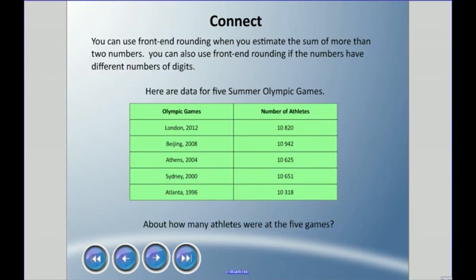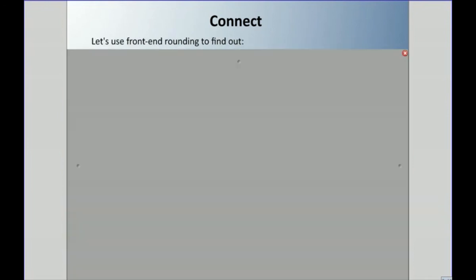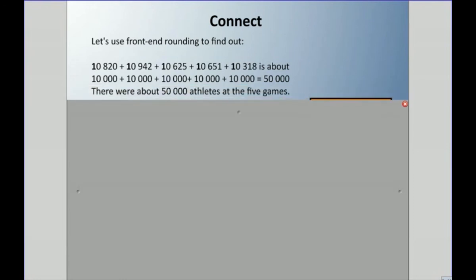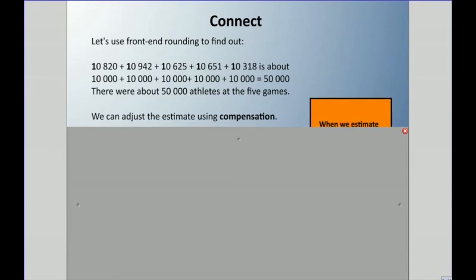We can also use front-end rounding when estimating the sum of more than two numbers, even when they have different numbers of digits. Here I have five different Summer Olympic Games and the number of athletes that participated. Using front-end rounding — taking the first digit of each, all starting with a one — we get about 50,000 athletes across the five games.